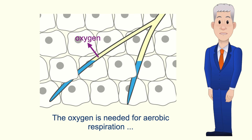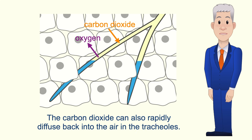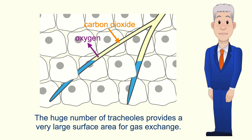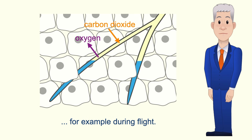The oxygen is needed for aerobic respiration, which produces the gas carbon dioxide. The carbon dioxide can also rapidly diffuse back into the air in the tracheoles. The huge number of tracheoles provides a very large surface area for gas exchange, and this allows insects to maintain a very rapid rate of aerobic respiration, for example during flight.